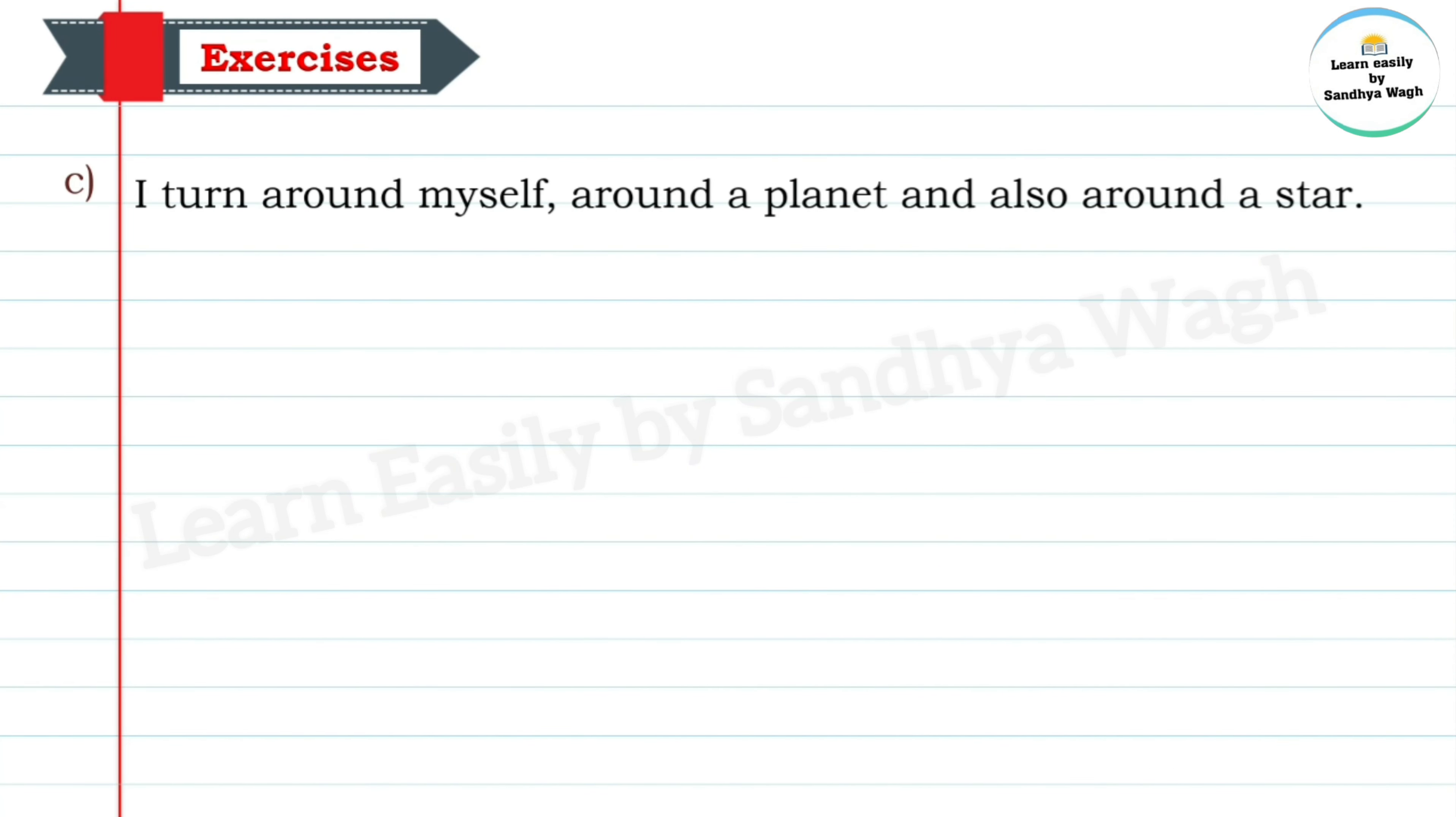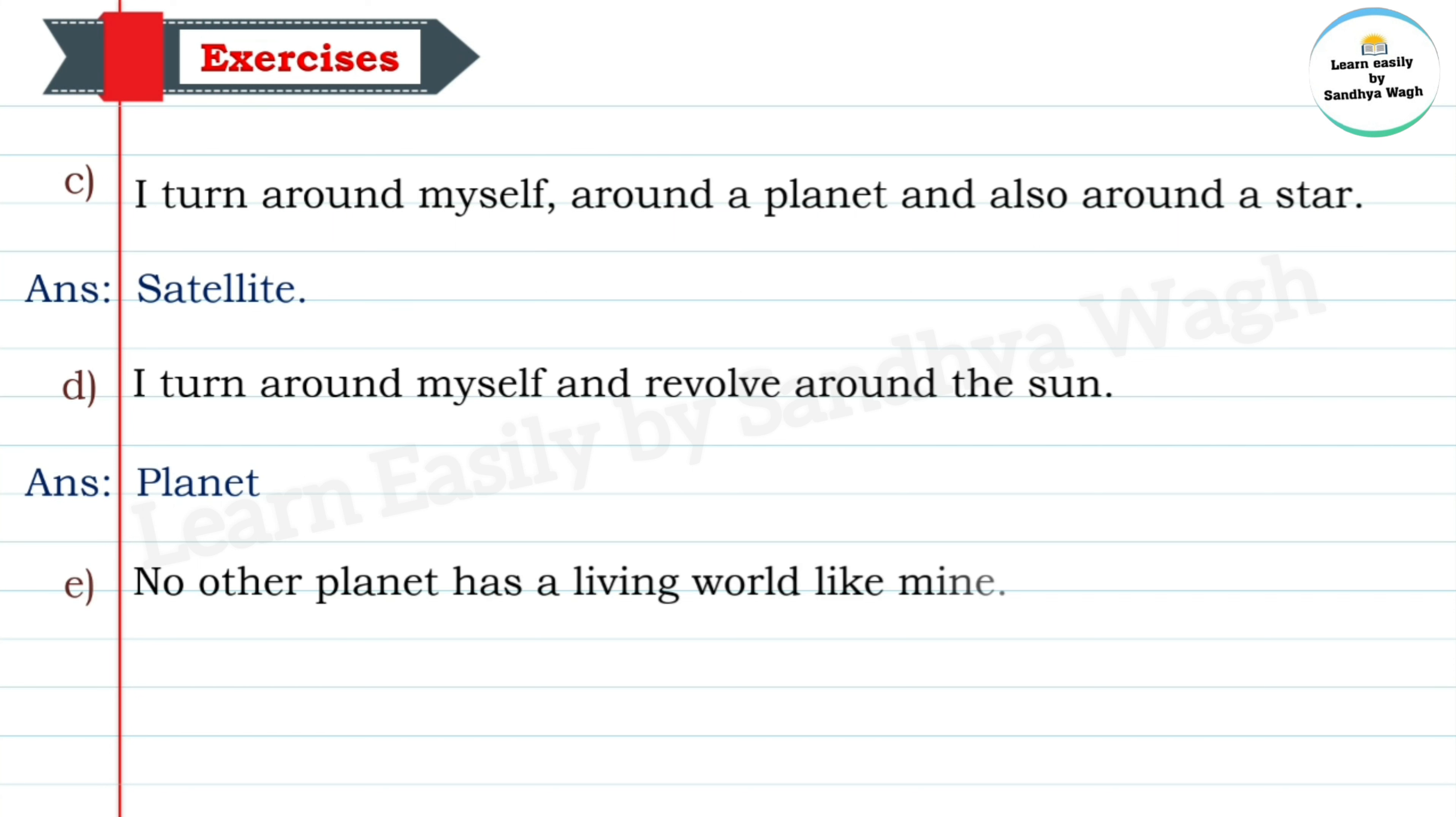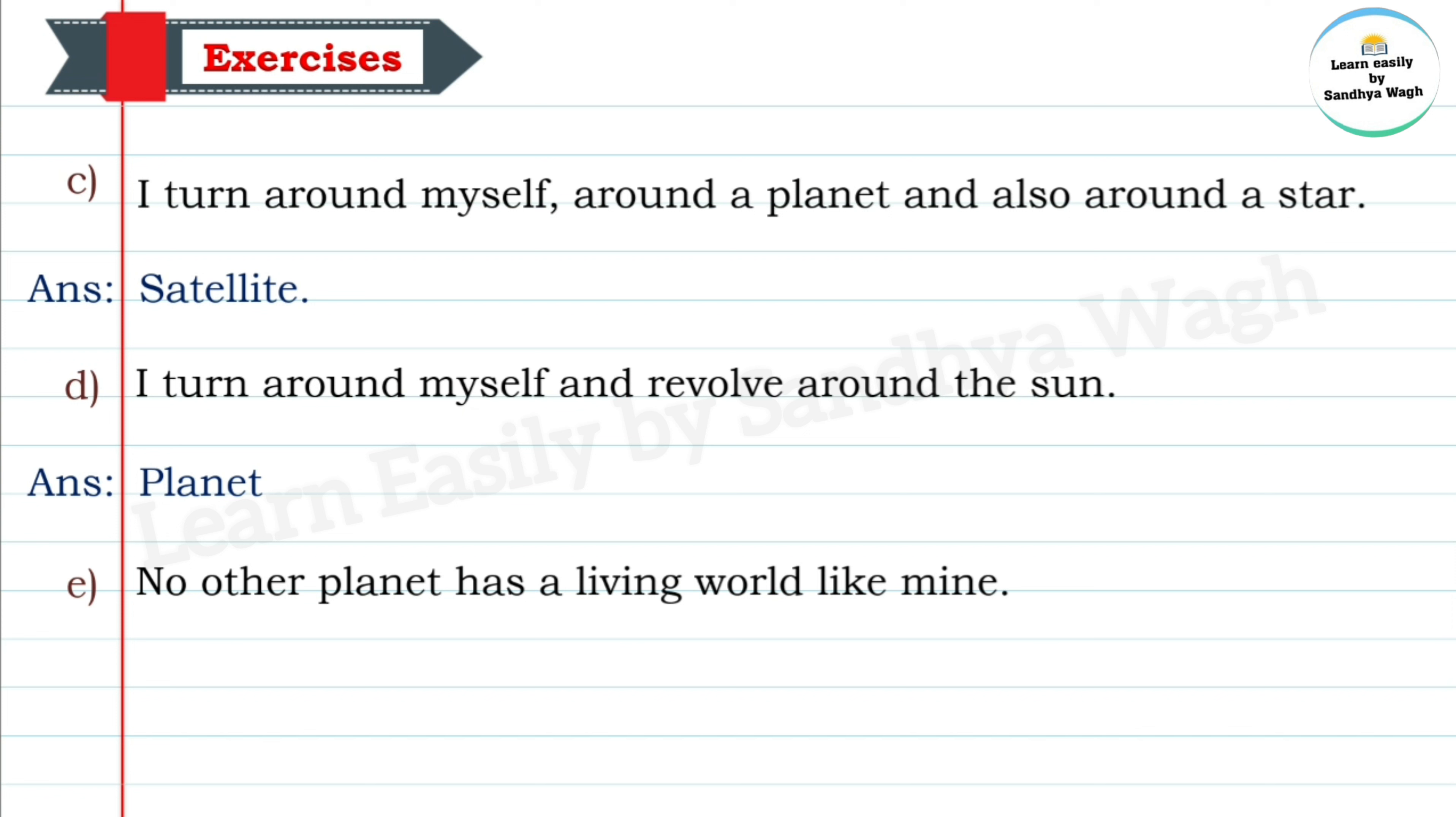C: I turn around myself, around the planet, and also around the star. Answer: Satellite. D: I turn around myself and revolve around the sun. Answer: Planet. E: No other planet has a living world like mine. Answer: Earth.